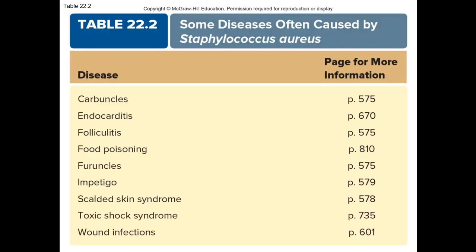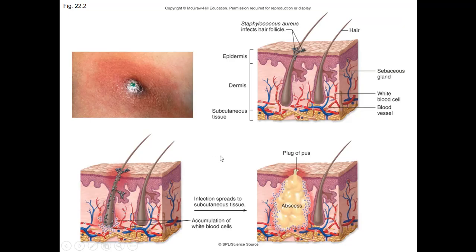Some of the diseases caused by Staphylococcus aureus that will exist on the skin include carbuncles, endocarditis, folliculitis, food poisoning, furuncles, impetigo, scalded skin syndrome, toxic shock syndrome, and wound infections. Tinea versicolor, which causes skin discolorations and forms yeast-like structures and pseudohyphae, is a very serious problem for AIDS patients.